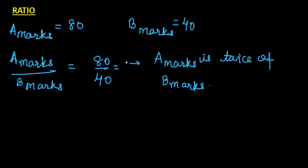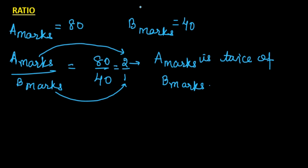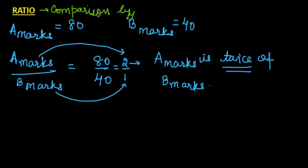For every one mark obtained by B, A has obtained two marks. So we say that A's mark is twice of B's mark. This comparison by division is called the ratio. So ratio is nothing but comparing two quantities by division.